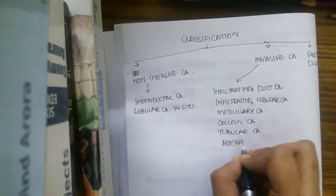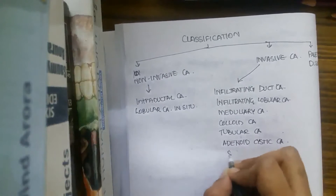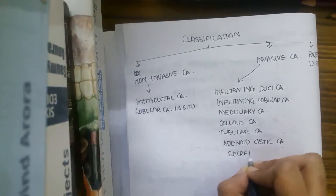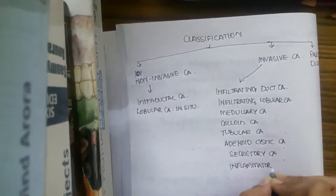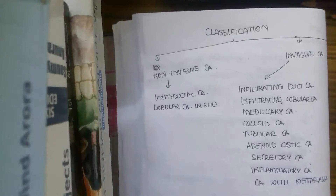Further types of invasive carcinoma include adenoid cystic carcinoma, secretory carcinoma, inflammatory carcinoma, carcinoma with metaplasia, and others — making it a total of ten types. This completes the classification of carcinoma of the breast.